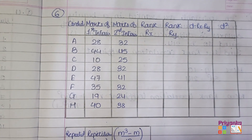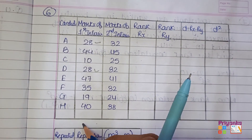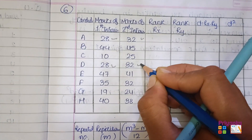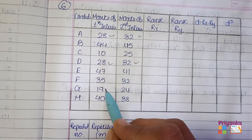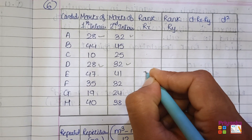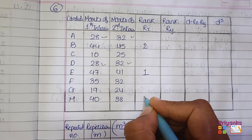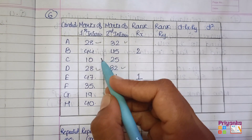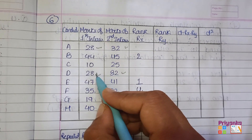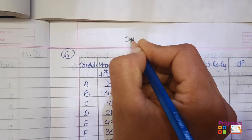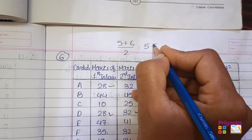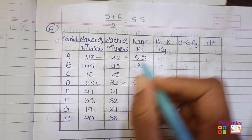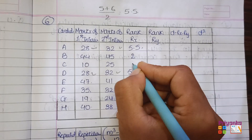Check for repeated numbers: in the X column, 28 has been repeated. In the Y column, two numbers are repeating. For X, the maximum is 47 (rank 1), then 44 (rank 2), 40 (rank 3), 35 (rank 4). Then 28 appears twice, occupying ranks 5 and 6, so (5+6)/2 = 5.5. Both 28 values get rank 5.5. The remaining values get ranks 7 and 8.